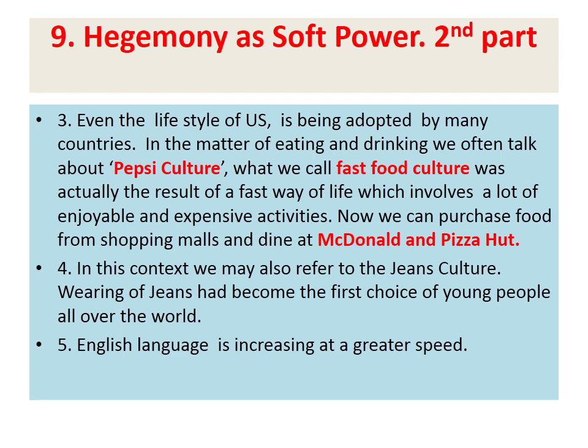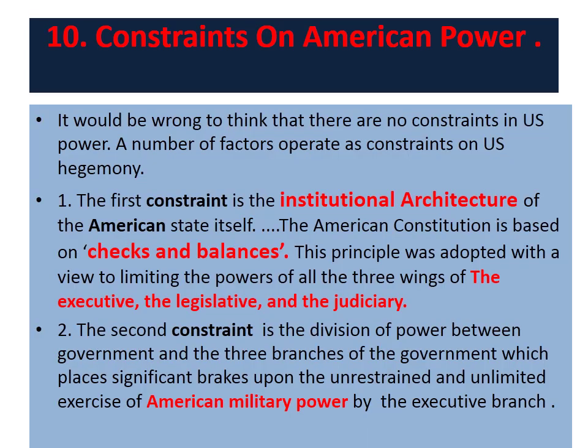These are the different aspects of hegemony. Now, constraints on American power: the US hegemony means that the US is the sole superpower, dominating the world in military, political, economic, and cultural fields. History tells us that empires declined because they decayed from within. Similarly, the biggest constraint on American hegemony is from within. Broadly, there are three constraints on American power.